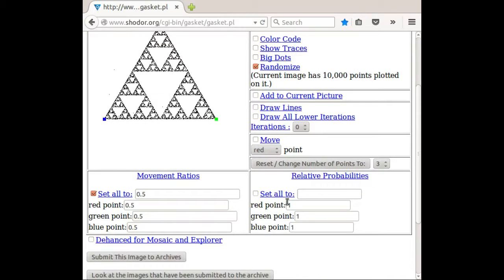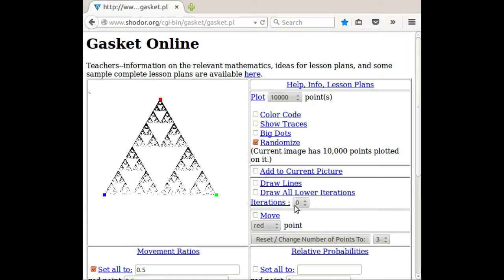We could change that up. Maybe I'll make red now three times as likely. I'm going to hit enter so that change goes into effect.